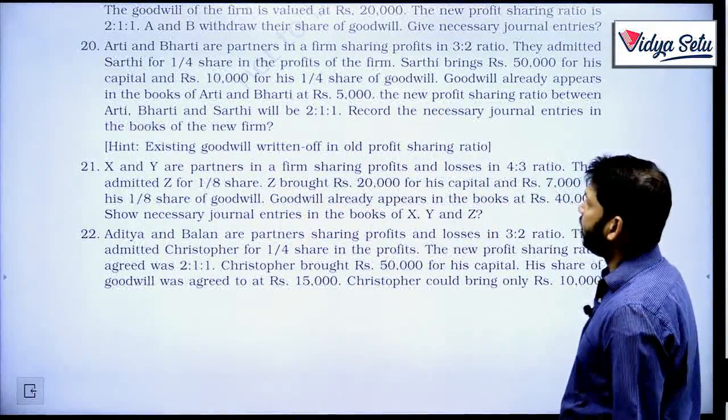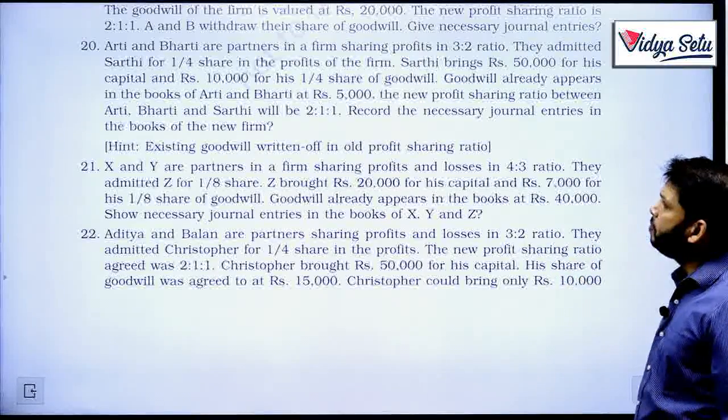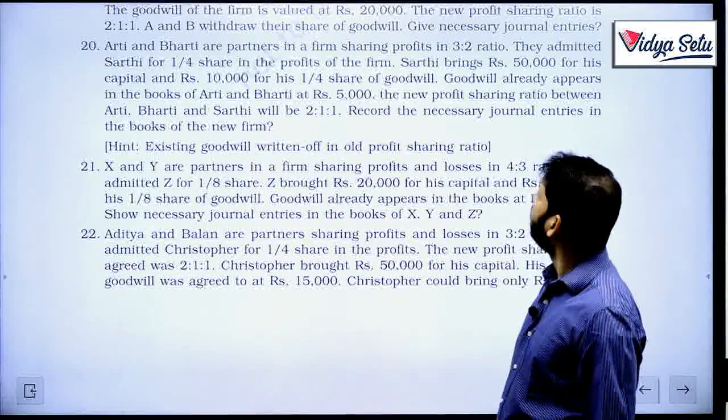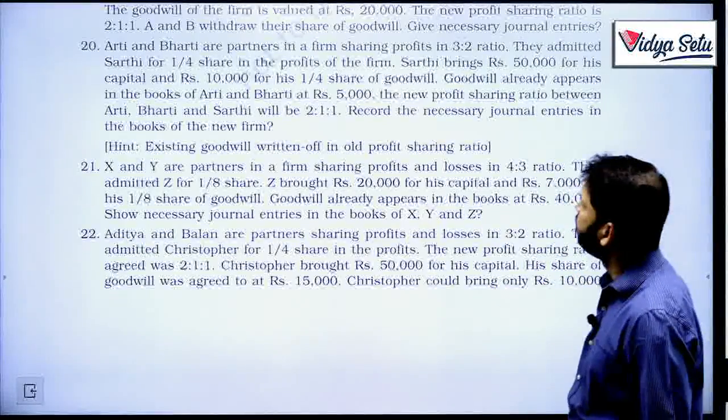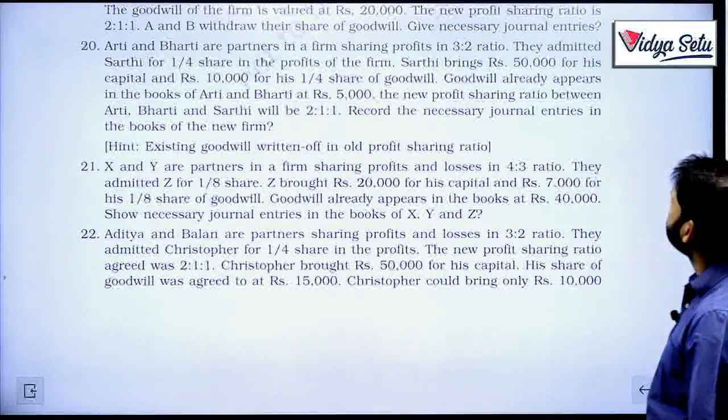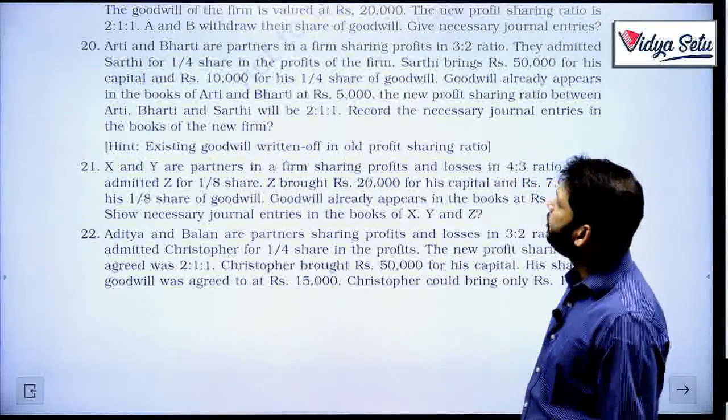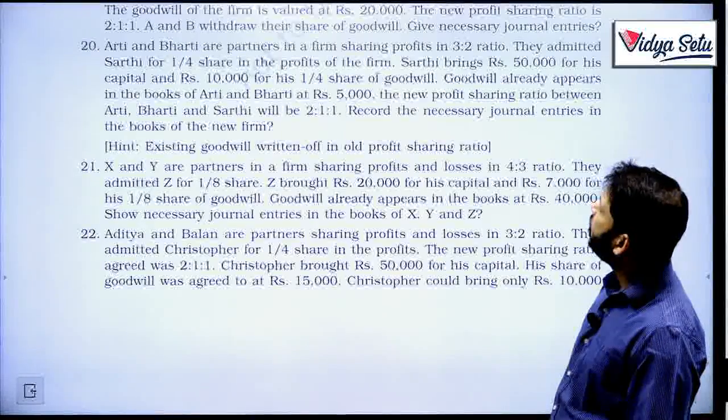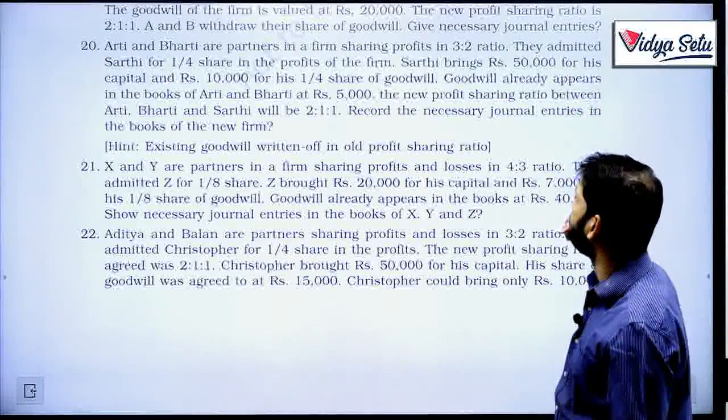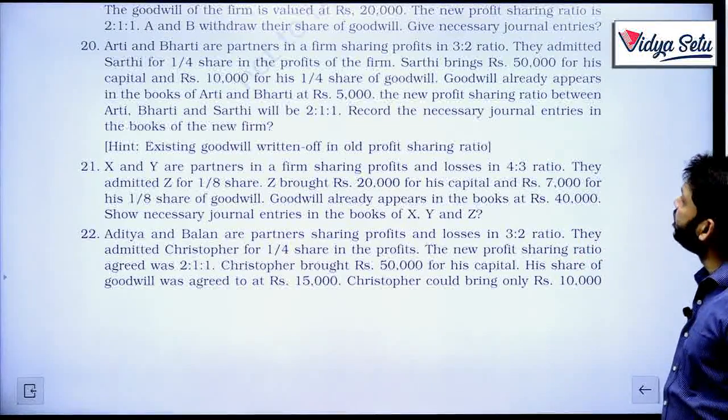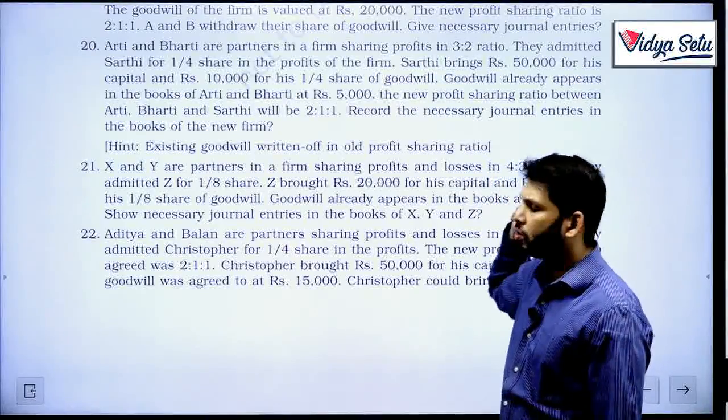Aarti and Bharti are partners in a firm sharing profits in the ratio 3 to 2. They admitted Sarthi for one-fourth share in the profits of the firm. Sarthi brings rupees 50,000 for his capital and rupees 10,000 for one-fourth share of goodwill. Goodwill already appears in the books of Aarti and Bharti at rupees 5,000.